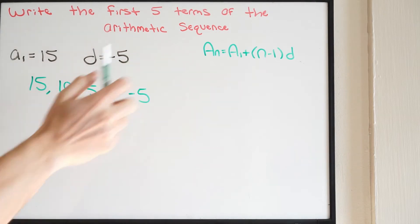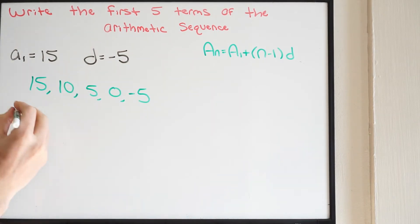So we're going to go ahead and rewrite this. We have A of N, where N is representing any term in the sequence. Then we have equal to A of 1, we know is 15,